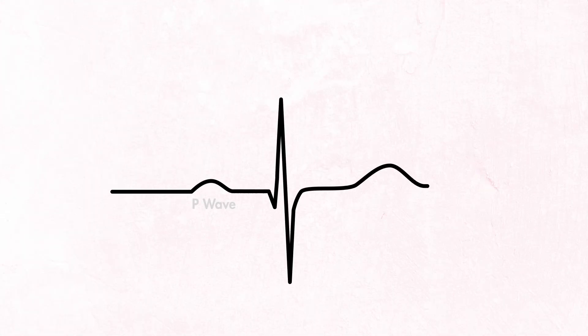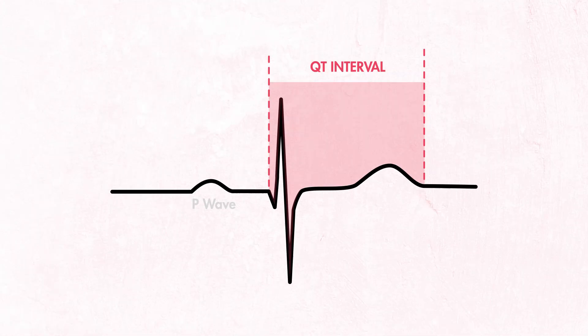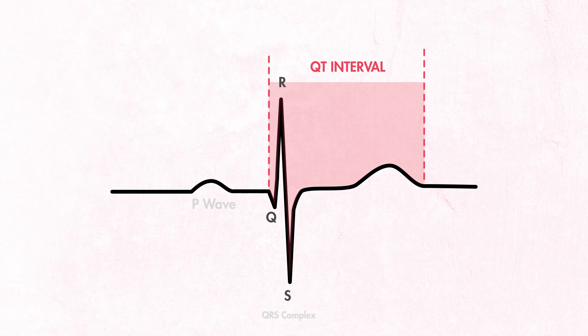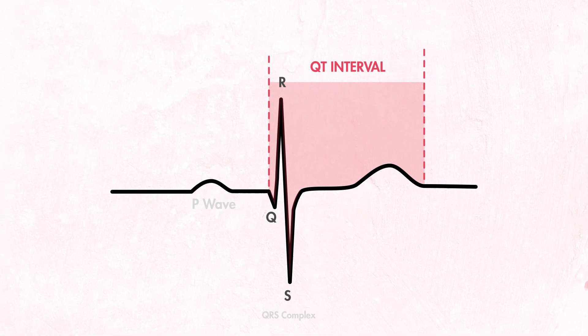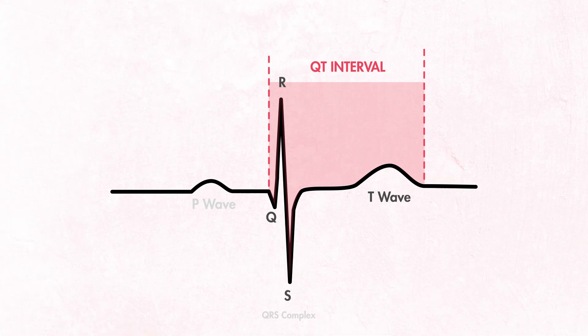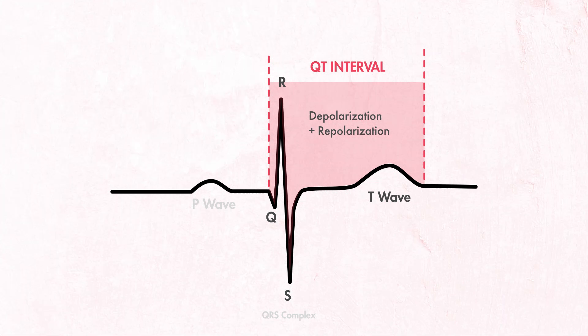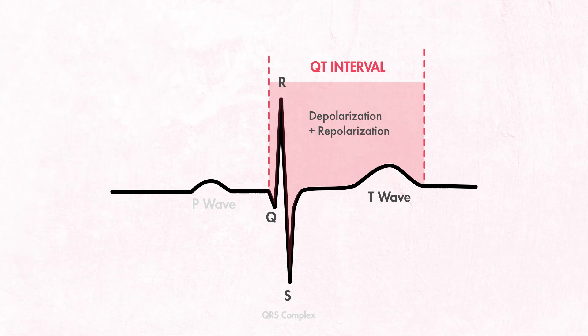The QT interval is indicated here, measured from the beginning of the QRS complex to the end of the T wave. It represents the time it takes for the ventricles of the heart to depolarize and repolarize, or contract and relax.